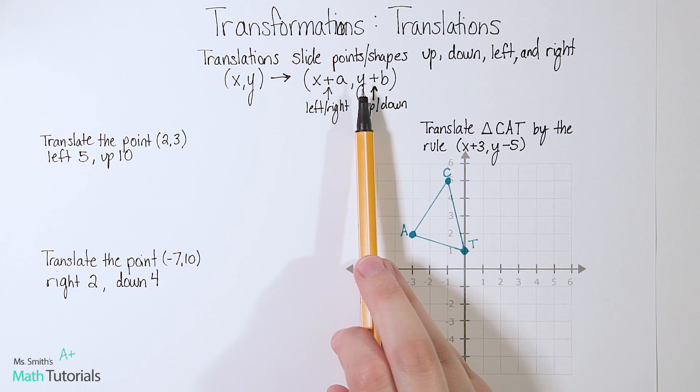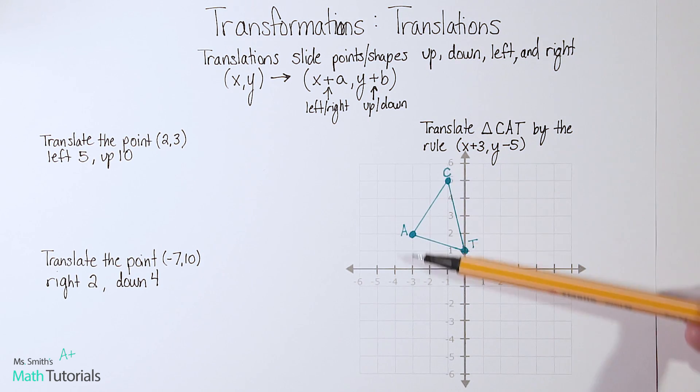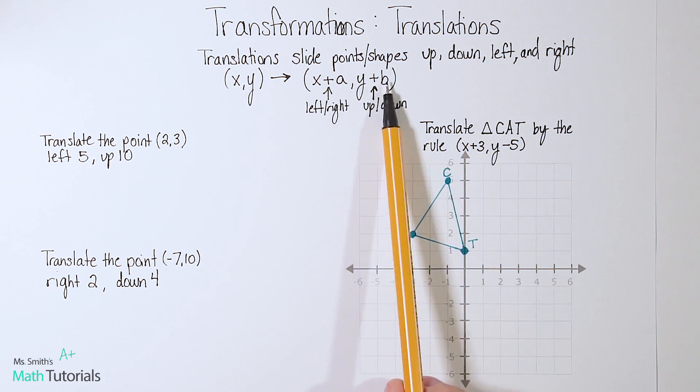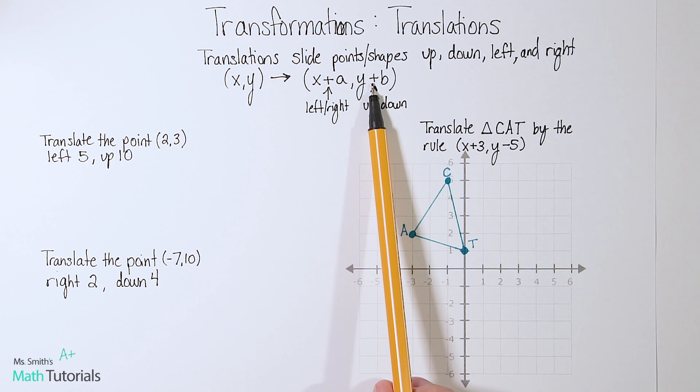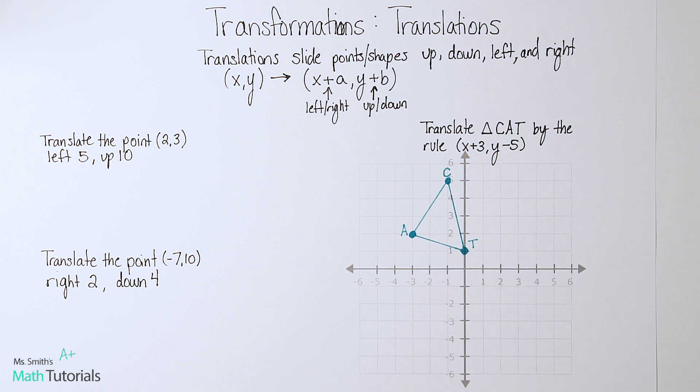The y value, y plus b, that controls whether our shape moves up or down. So whatever b is, if this is a negative, we'd be moving down. If it's a positive, we'd be moving up. And then whatever our value for b is.